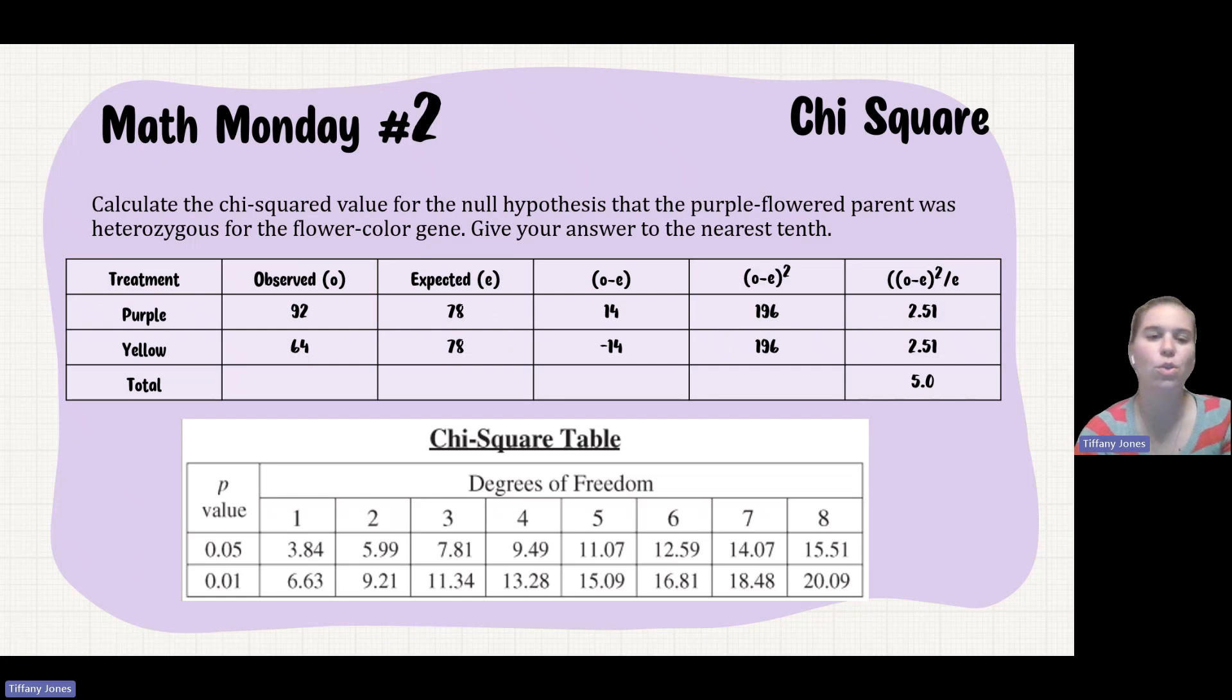So if you wanted to analyze this to determine are you going to accept or reject that null, you're going to look at a degree of freedom of 1, and our p-value is going to be 0.05, which is 3.84. And so since 5.0 is greater than 3.84, I'm going to reject my null hypothesis that this is not going to be a heterozygous purple flower.